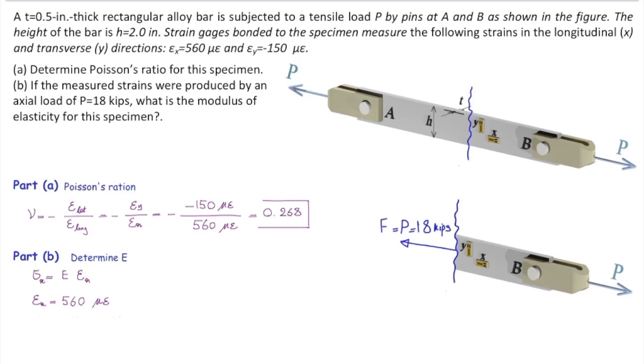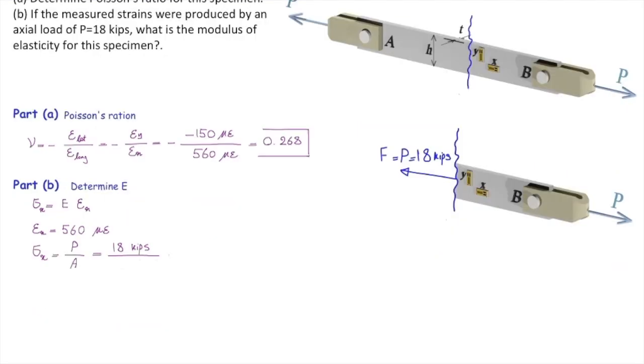The second part would be calculating the area. Area is simple because that is a rectangle. Height of that is 2 inches, thickness of that is half an inch. So that gives me 1 square inch. And the stress in that element is 18 ksi.